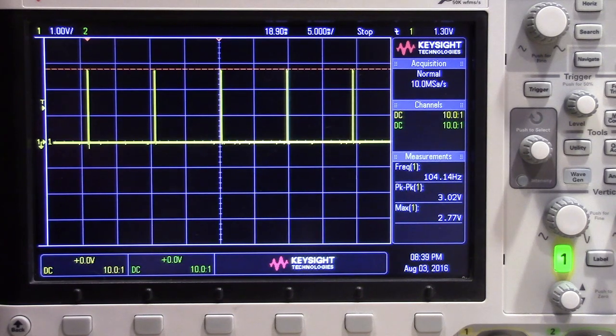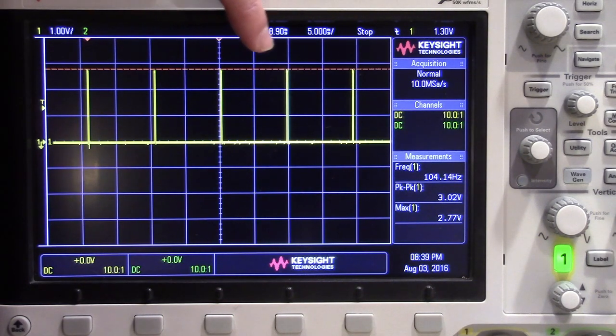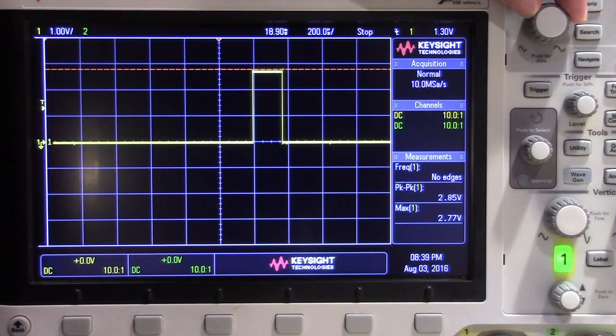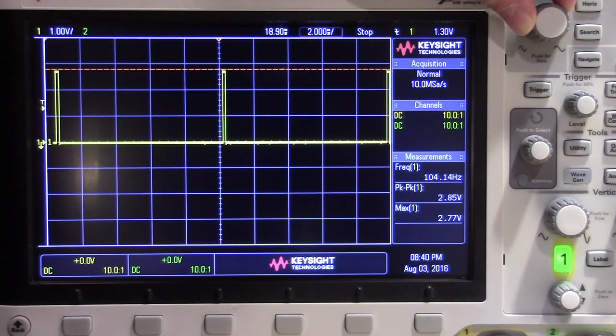And as you can see, that comparator works just as expected. We get some nice clean digital pulses here, whenever the photodiode detects the output from the phone's IR proximity sensor.